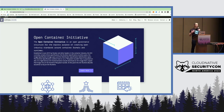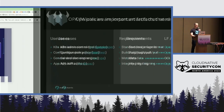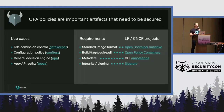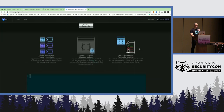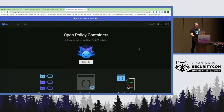OCI has now been extended to contain other artifacts besides Docker images. At the same time, we want the Docker workflow — being able to build, tag, push, and pull policies, just like Docker containers. For that, we have the Open Policy Containers project, which is a CNCF sandbox project for doing exactly that.